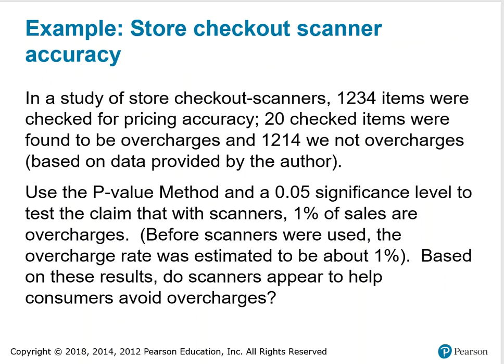Example number 2: store checkout scanner accuracy. In a study of store checkout scanners, 1,234 items were checked for pricing accuracy; 20 checked items were found to be overcharges and 1,214 were not overcharges. Use the p-value method and a 0.05 significance level to test the claim that with scanners, 1% of sales are overcharges. Before scanners were used, the overcharge rate was estimated to be about 1%. Based on these results, do scanners appear to help consumers avoid overcharges?